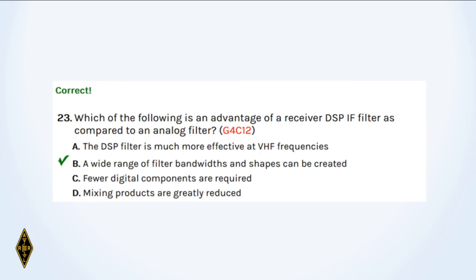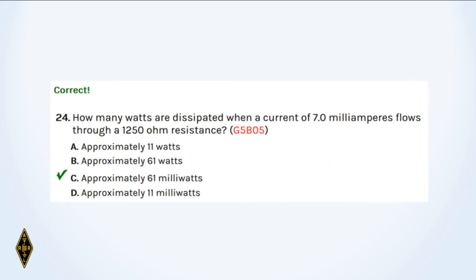And 23: Which of the following is an advantage of a receiver DSP-IF filter? A wide range of filter bandwidths and shapes can be created in digital signal processing. And 24: How many watts are dissipated when a current of 7 milliamps flows through a 1,250 ohm resistance? That was in the earlier test — it's still 61 milliwatts. That's I squared R, that's the formula.